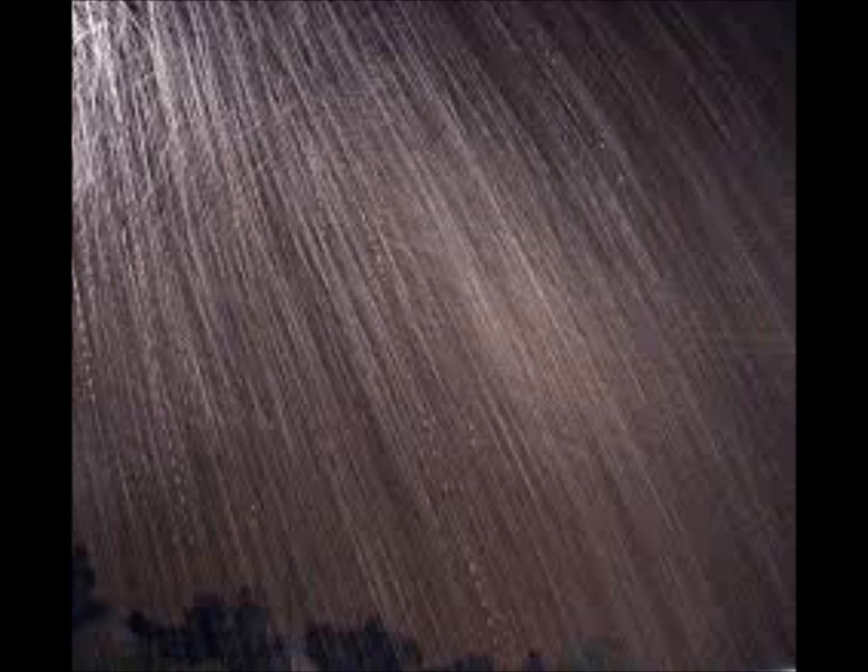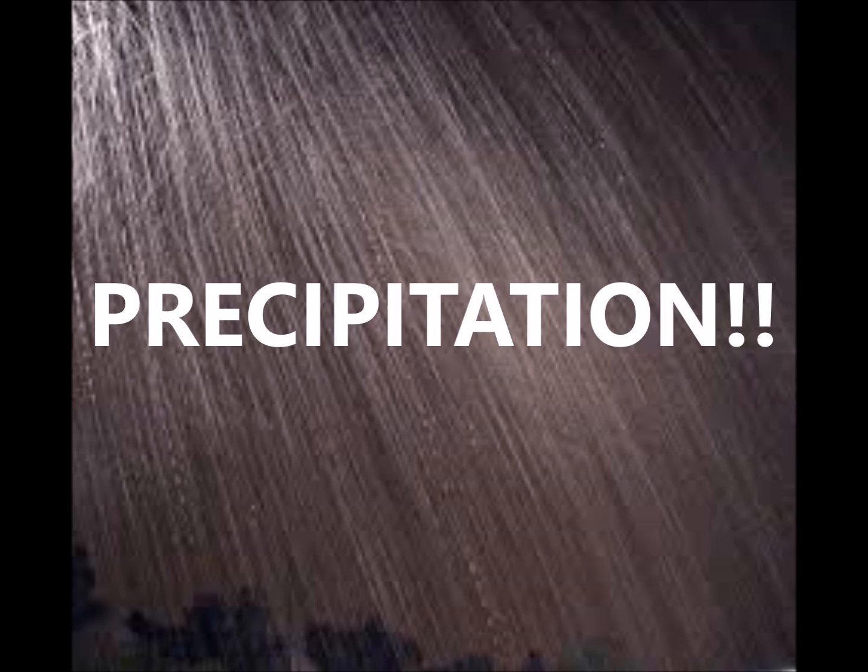After the cooled water collects, it begins to form rain in the clouds. Gravity brings it back down to earth. This is called precipitation. Forms of precipitation include rain, snow, or sleet.